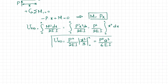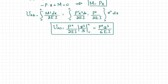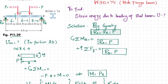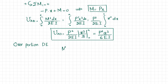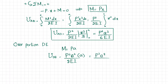Now we move to portion DE. You can see that when x equals a, the bending moment equals P times a. Since there is no load between D and E, this moment remains constant over the entire DE segment of length a. So the strain energy in portion DE is U_DE equals M² times length divided by 2EI, which is P²a² times a divided by 2EI, giving P²a³ divided by 2EI.